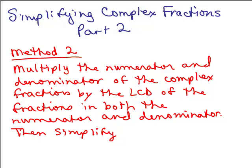At the end of part 1, I introduced another method, and we worked one of the problems using method 1 with a new method, which I'll call method 2. In this method, we multiply the numerator and denominator of the complex fraction by the least common denominator of the fractions in both the numerator and denominator, then simplify.